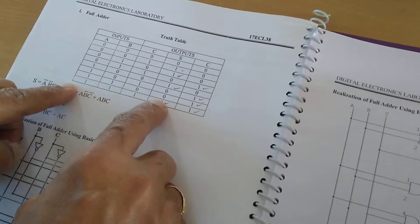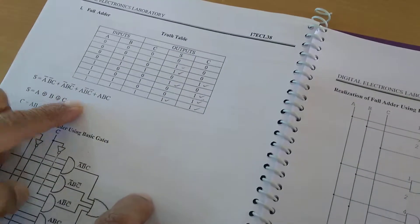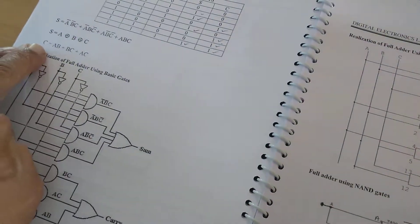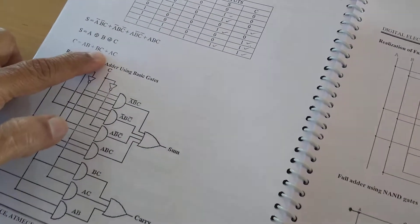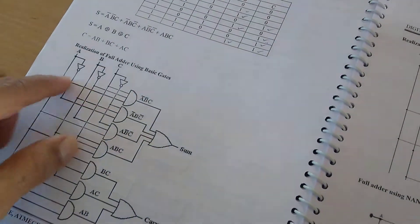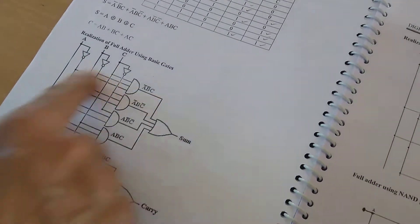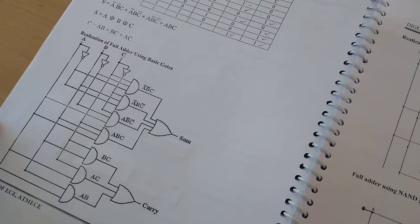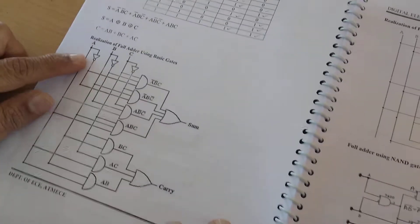Those terms are written. After writing those, we will simplify that and finally we will get carry as AB plus BC plus CA.